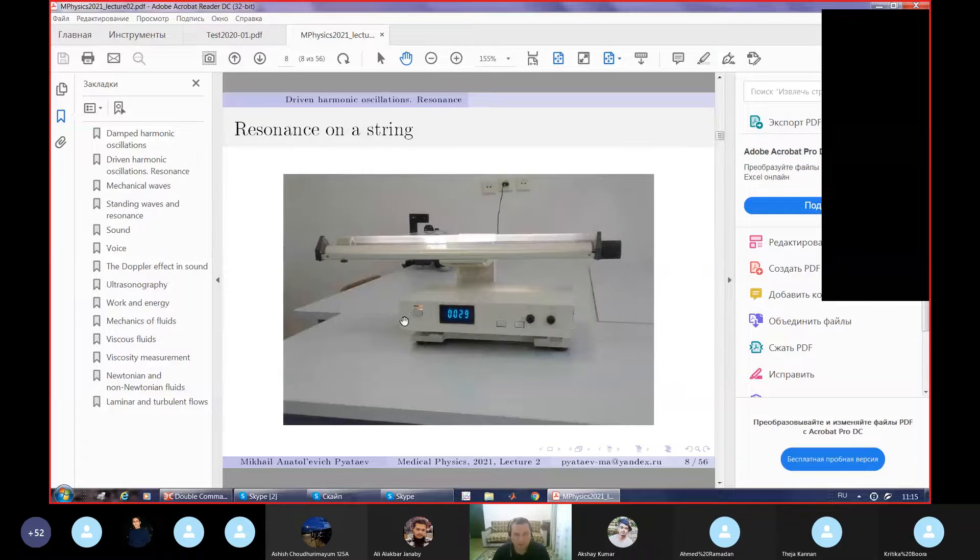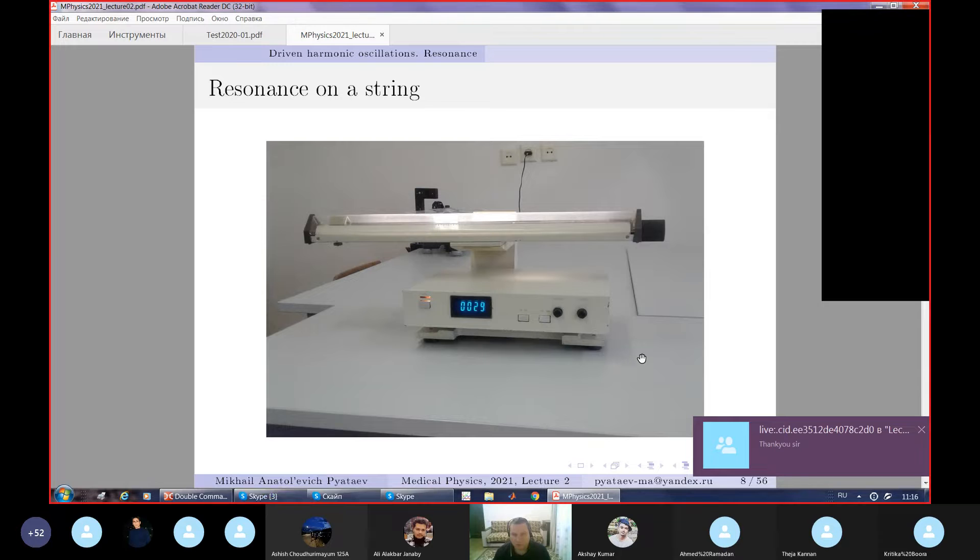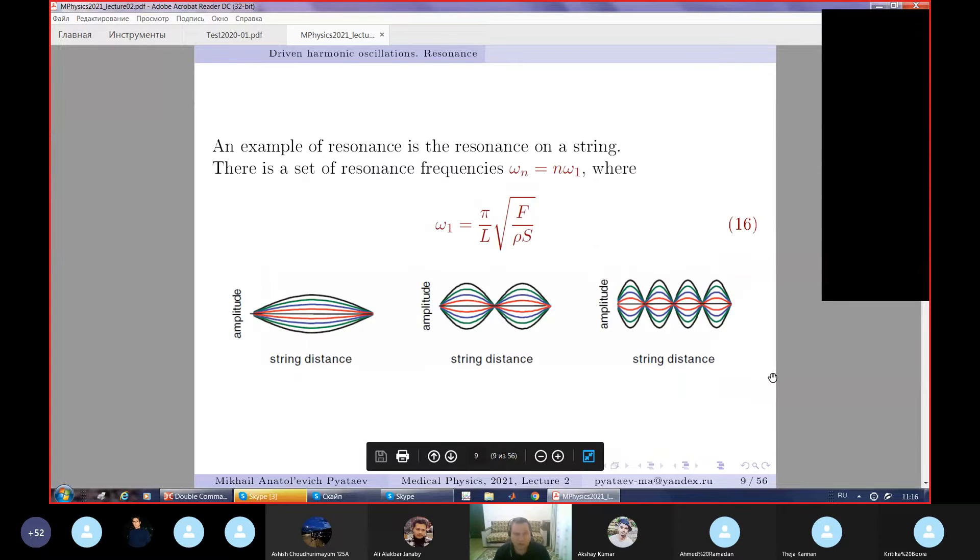Now let's see an exercise used in our laboratories and online exercises - resonance on a string. This device allows one to demonstrate resonance phenomena experimentally. Here are examples of string shapes seen during resonance. For the first resonance frequency we see this shape, for the second like that, and this one is for the fourth resonance.